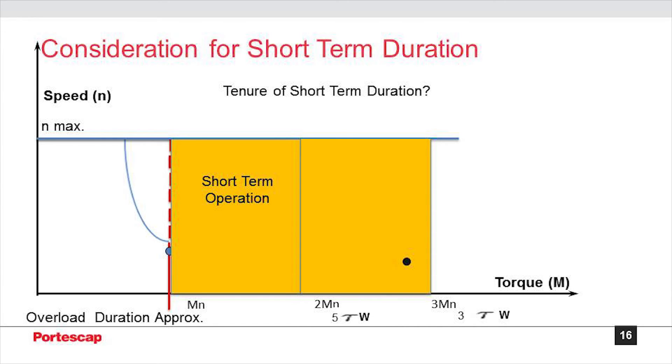As given in the speed torque curve in the catalog, there is a temporary working range where we can overload the motor for a certain time span. This time span depends on the motor size and the motor design.